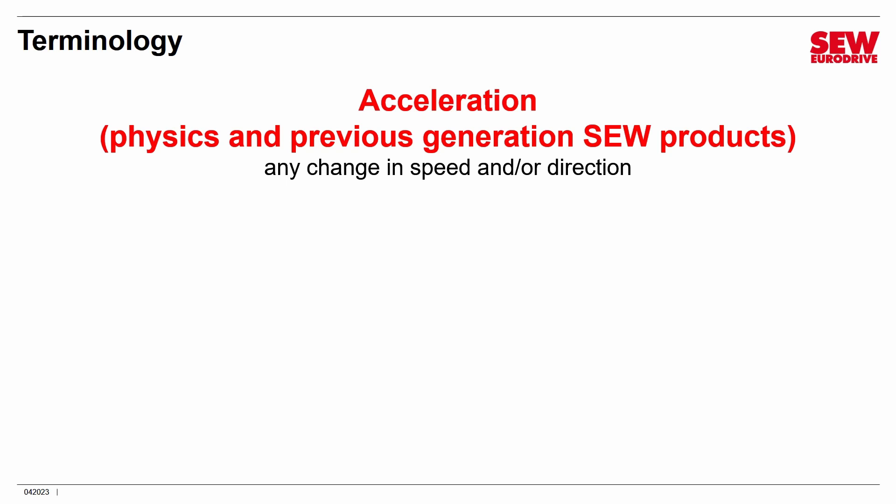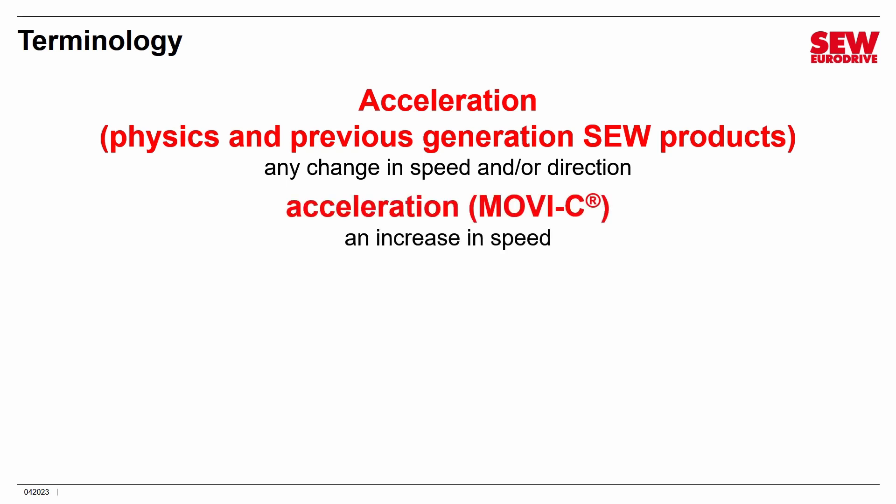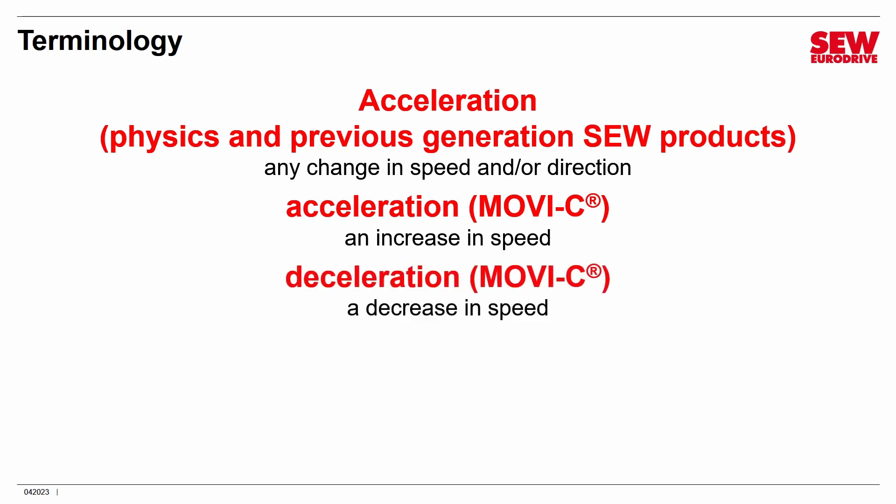With MOVC, we went with the everyday understanding: acceleration means an increase in speed and deceleration means a decrease in speed. It's simpler and more intuitive, and you'll see those terms in MOVC Suite — not just 'ramp' or 'acceleration' like in older products. We still do use the term ramp, however. It simply means any acceleration or deceleration event — any change of speed, either up, down, or a directional change.